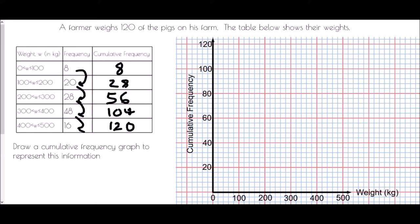A little thing to check here is just making sure we have got the correct value at the end of the cumulative frequency. This value is 120, telling me that in total there must have been 120 items in the table. Going back to the start, we were told there were 120 pigs, so we have got the correct number.